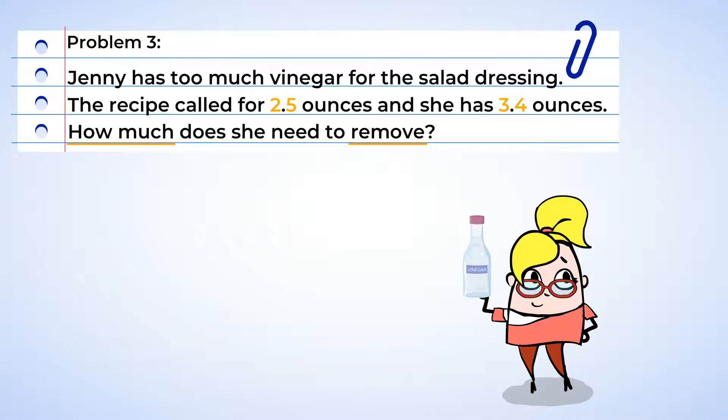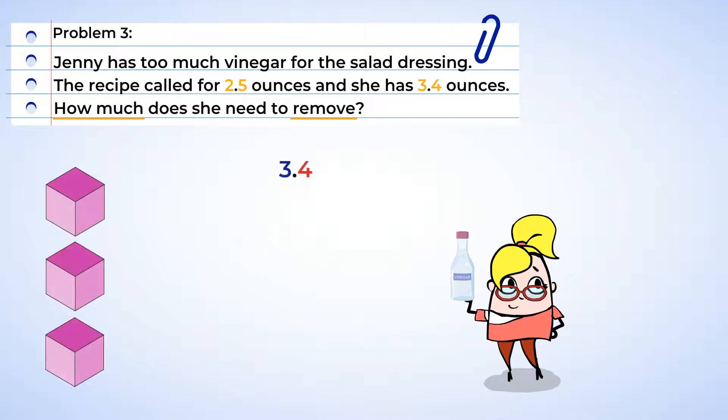Let's use place value blocks to help us visualize what we need to do. Here, we have the 3 wholes and 4 tenths. The whole amount of the vinegar. Now, let's take away 2 wholes and 5 tenths. That's the recipe amount. And see how much extra vinegar Jenny has left over. Alright, let's start with those tenths.